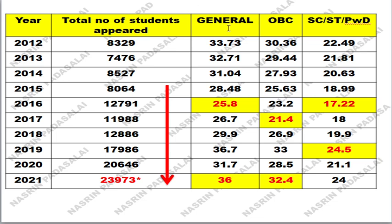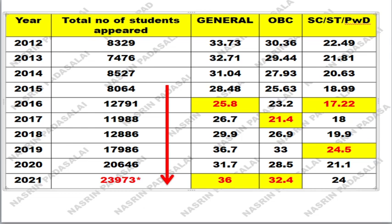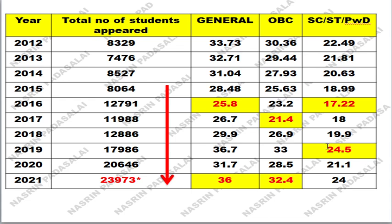Let me clarify the marks category-wise. For the general category, the highest recorded cutoff mark is 36 and the lowest cutoff is 25.8. Most commonly the cutoff for general category life sciences will be around 30. For OBC category, the highest cutoff is 32.4 and the lowest ever reported is 21.4. For SC, ST, and persons with disability, the highest cutoff reported is 24.5 and the lowest is 17.22.